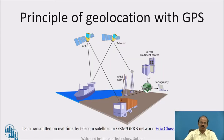As already mentioned, it is spherical trigonometry which is dominant in this case. This is the principle of geolocation with GPS. Because of trilateration, we are able to find the position of each object on earth with the help of satellites. Later on, GPRS or GSM technique allows us to exchange the data, and finally the information can go into cartography or mapping science.